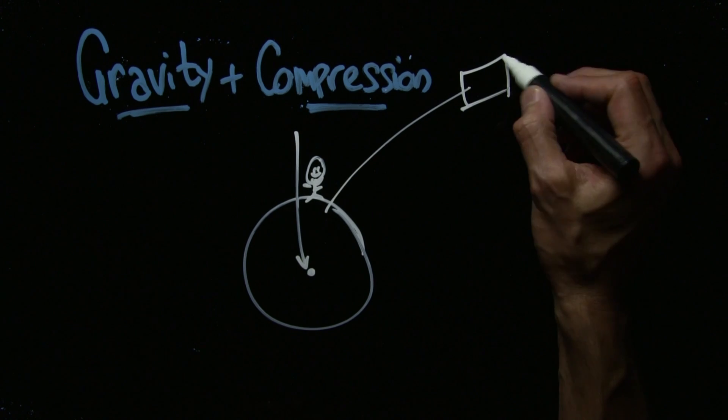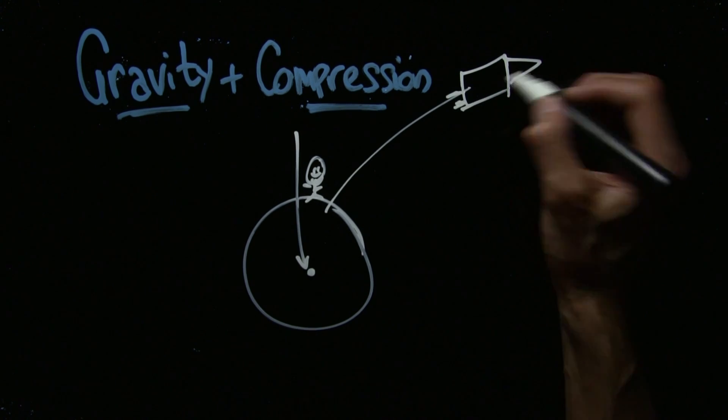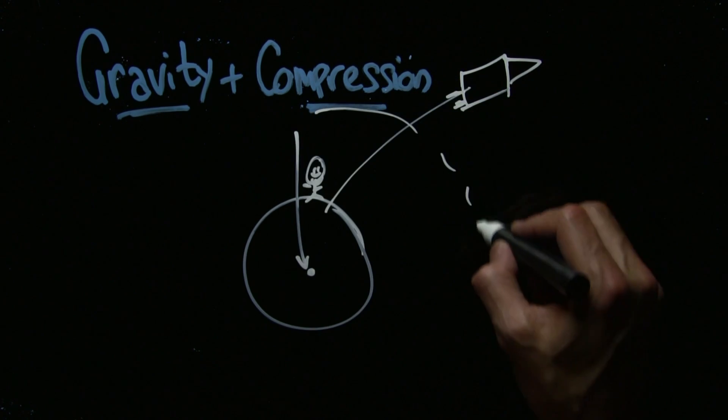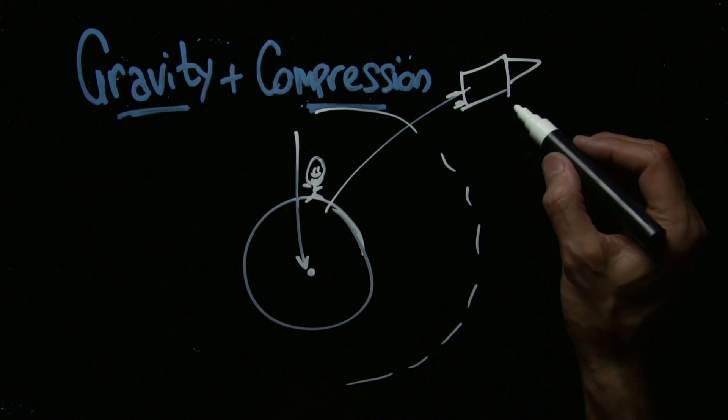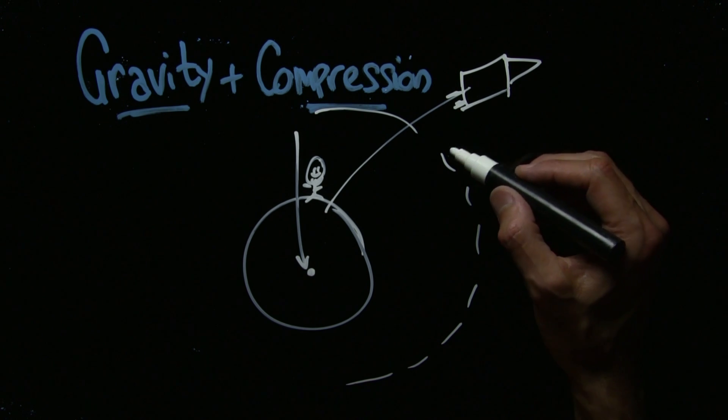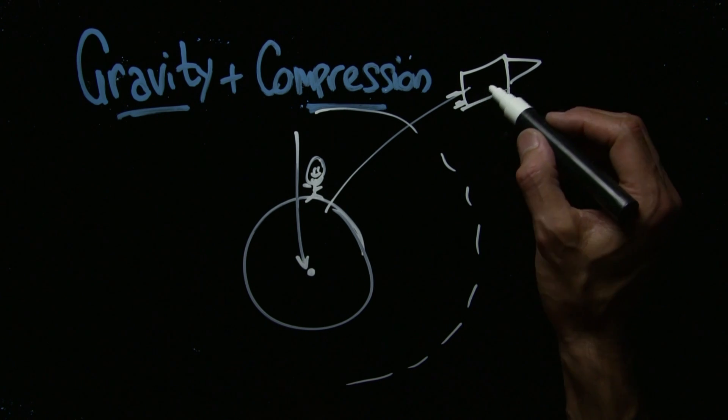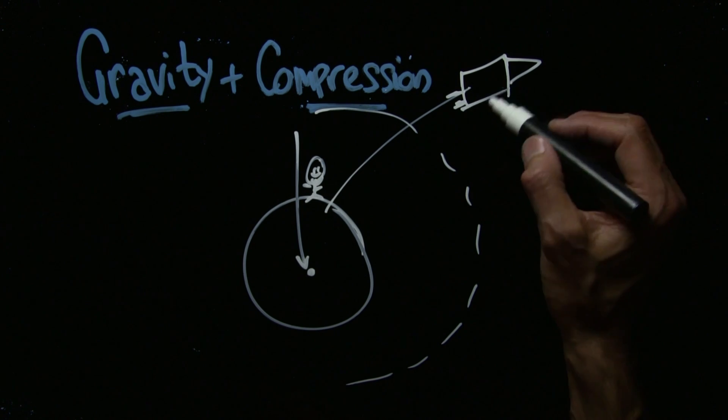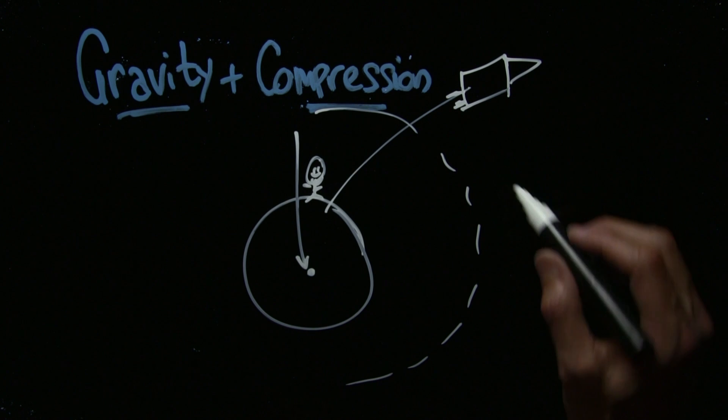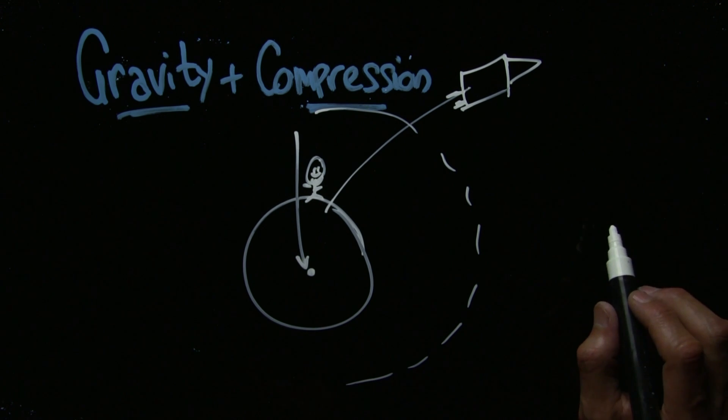Joan tells us that if you hop on a rocket ship and you blast off as an astronaut and you leave this gravitational pull, your health deteriorates immediately and radically. These astronauts are the healthiest people on the planet, age 20 to 30 years in a very brief trip out of gravity's pull.